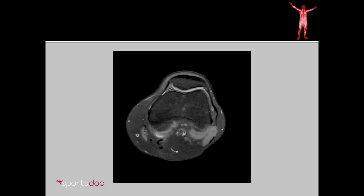In our first surgical video, we'll see a demonstration of a medial plica. Here we have the MRI of that patient. You can see, indicated by the green star, the patella on top and then outlined here the trochlea or groove which the patella runs in. And if you look very carefully, there's a black piece of tissue in the left side of the joint, outlined in red, which is consistent with a medial plica.